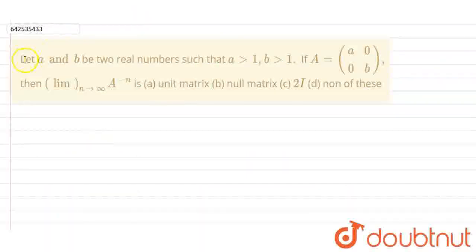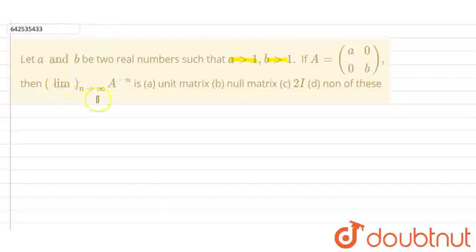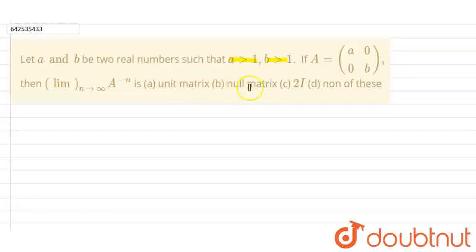This question says: let A and B be two real numbers such that A is greater than 1, B is greater than 1, and the matrix is A = [[a, 0], [0, b]]. Then the limit as n tends to infinity of A raised to power minus n is which matrix? The options are: first, unit matrix; second, null matrix; third, 2I; and fourth, none of these. So let us solve this question.